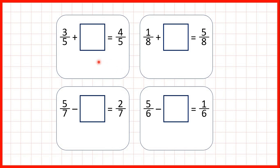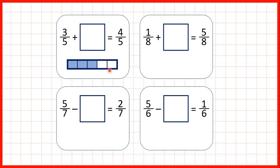We have some missing fraction addition and subtraction problems. First, 3/5 plus what is equal to 4/5? We can show 3/5 as three parts out of five on our fraction bar, and we know that something has been added to make 4/5. If we colour in 4/5 of our fraction bar, we can see that we need an extra 1/5 to make 4/5 coloured in altogether.